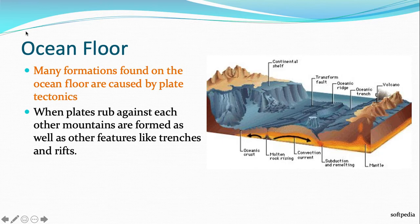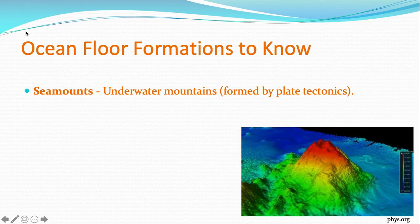Many formations found on the ocean floor are caused by plate tectonics. When plates rub against each other, mountains are formed as well as other features like trenches and rifts. We're going to talk specifically about particular ocean floor formations that you need to know. An underwater mountain is called a seamount, and you need to know how these are formed too. Seamounts are formed by plate tectonics, the same way mountains are formed anywhere.